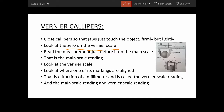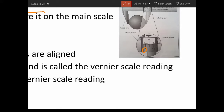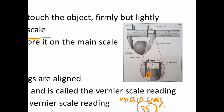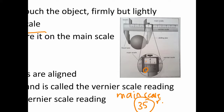Now you look at the zero on the vernier scale. Read the measurement right before the zero — in this case, that's 35. Write it down as the main scale reading, which is 35 millimeters. You close the calipers so the jaws fix on the object, not too hard, just lightly enough to hold it in place.